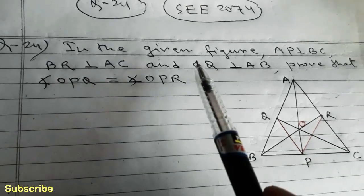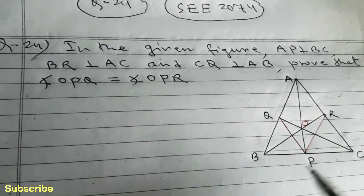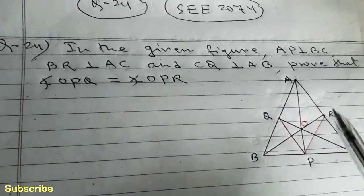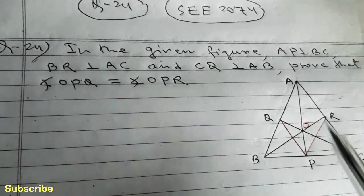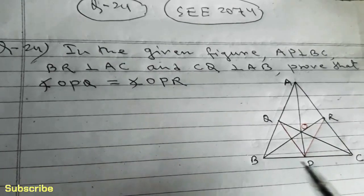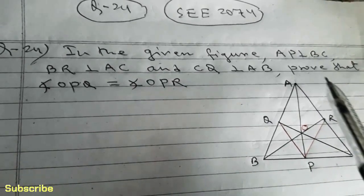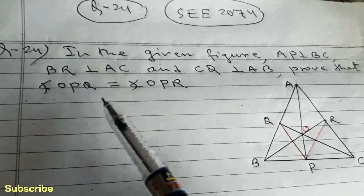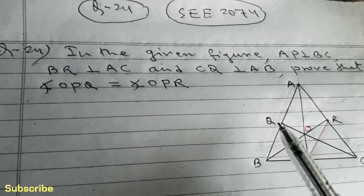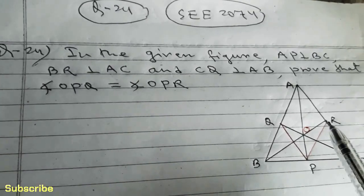The question is: in the given figure, AP is perpendicular to BC, BR is perpendicular to AC, and CQ is perpendicular to AB. That means we are given the three altitudes of triangle ABC. We have to prove that angle OPQ is equal to angle OPR.